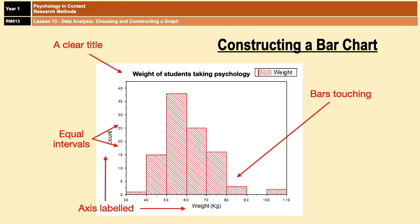Just like with the other types of charts, there are certain things you have to remember when constructing a histogram, which are on the screen there: things like a clear title, equal intervals, labelled axes, and so on.